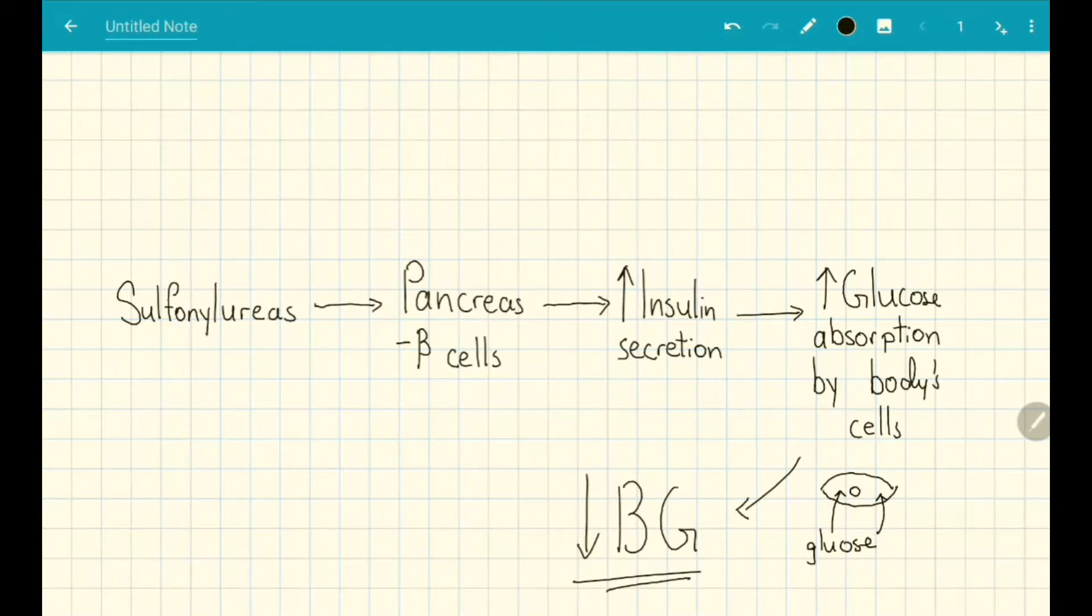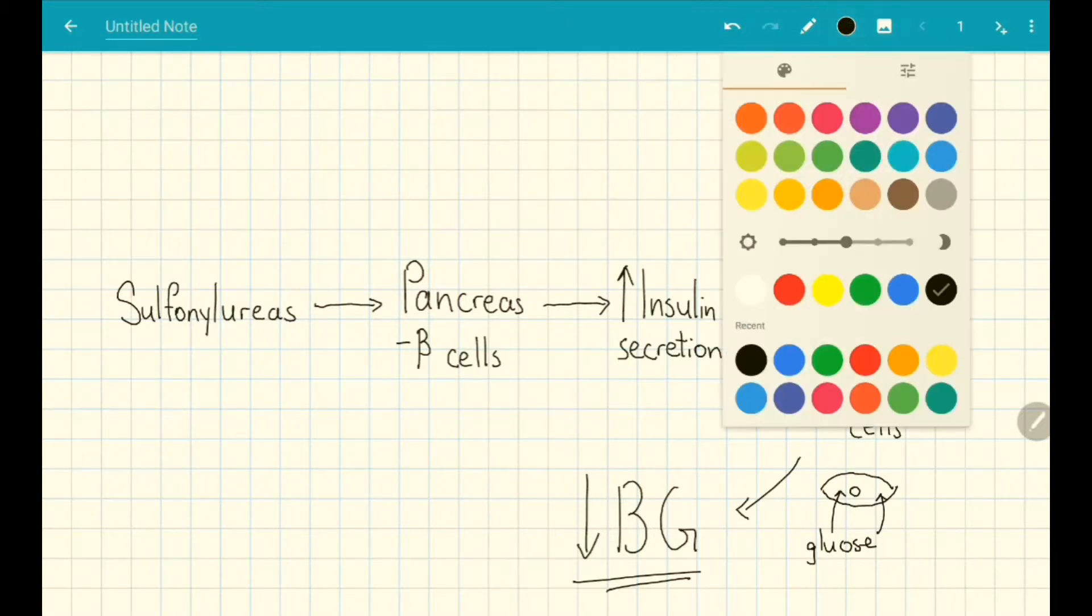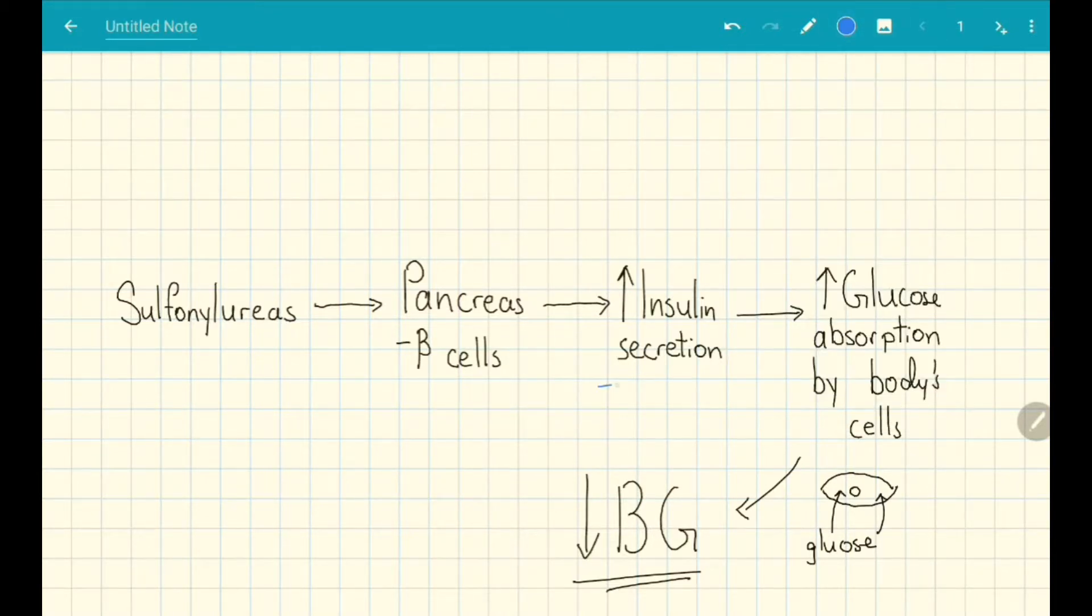For a more in-depth explanation of the mechanism of action, check out my other video. Second generation sulfonylureas tend to start increasing insulin levels within 15 to 60 minutes of taking the medication, with peak concentrations of the drug in approximately 2 to 6 hours, depending on if you are taking the slow release product.